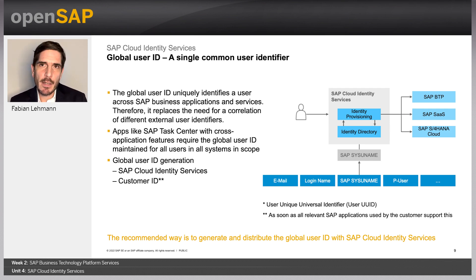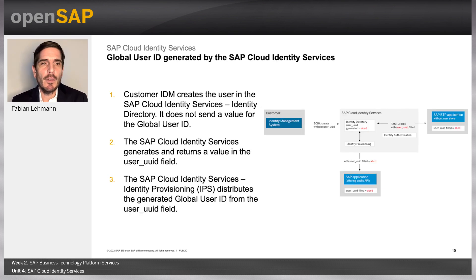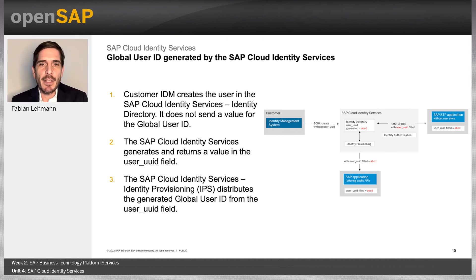The user UUID is the technical field name, and the global user ID is the noun we use when talking about it. The recommended default setup is to use Cloud Identity Services to generate all those UUID values. You can then replicate this via IPS into the target solution. You can also connect your identity management to Cloud Identity Services.